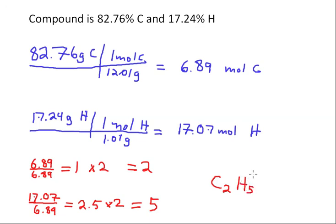And that's how we determined the empirical formula for this hydrocarbon, which is 82.76% carbon, 17.24% hydrogen. And those percentages are, of course, percentages by mass.